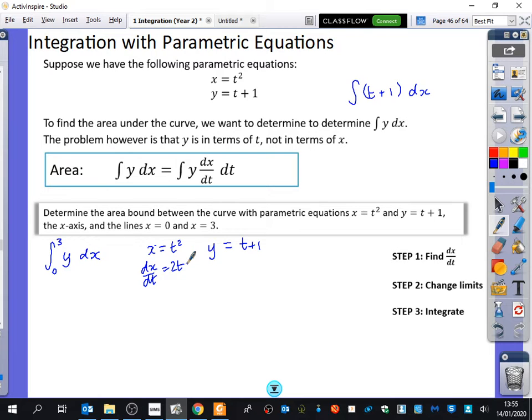So we have x is t squared and y is t plus 1. dx/dt is 2t. You'll notice here that the limits for the x values are between 0 and 3. But the limits always have to match what you're integrating with respect to. And this should remind us of what we did with substitution. We did a substitution, we had to change the limits. So for step two, we're also going to have to change out what the limits were. Now, previously, the x limits were 3 and 0. So our t limits are going to be root 3 and 0.